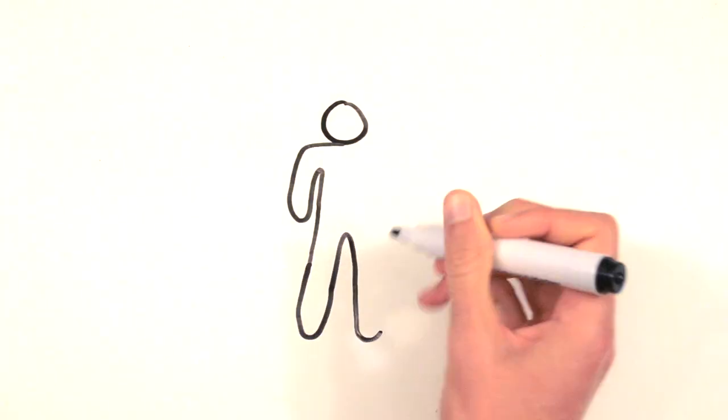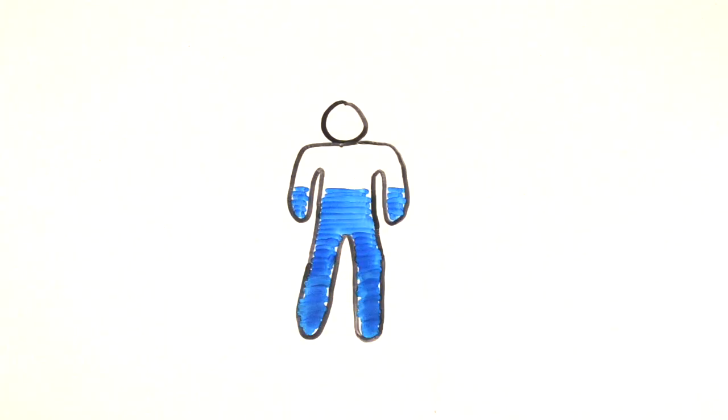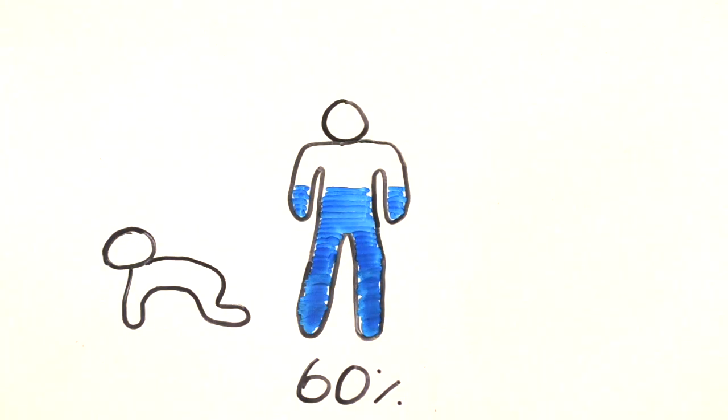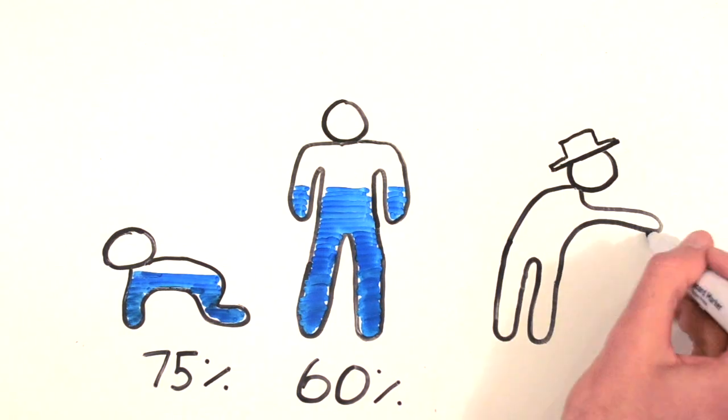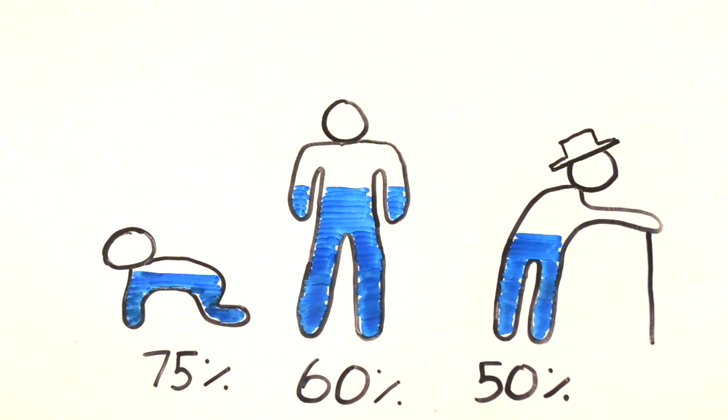And we as humans are certainly included in this list as 60% of our bodies are made up of water. Interestingly though, the older we get, the less amount of water we are. Newborns for instance are made up of about 75% water, while the average adult is about 60. Then we have the elderly which typically are made up of about 50% water.